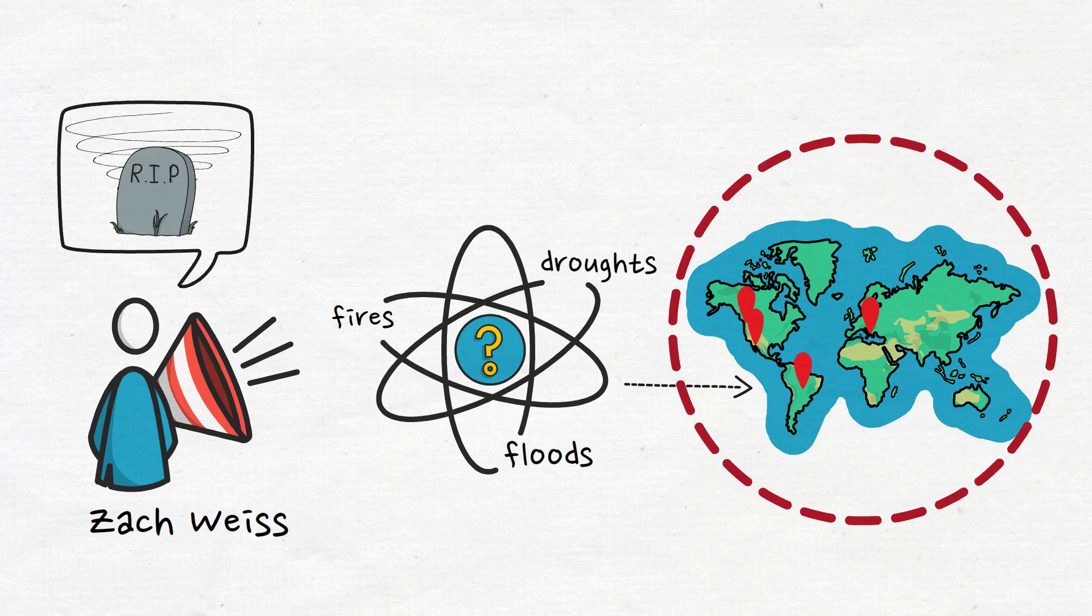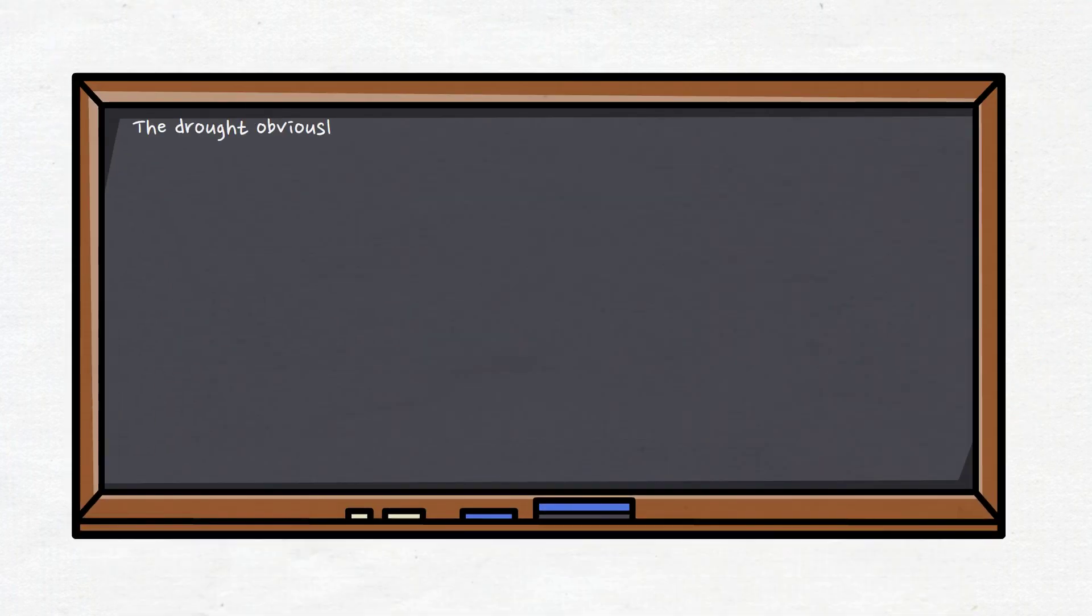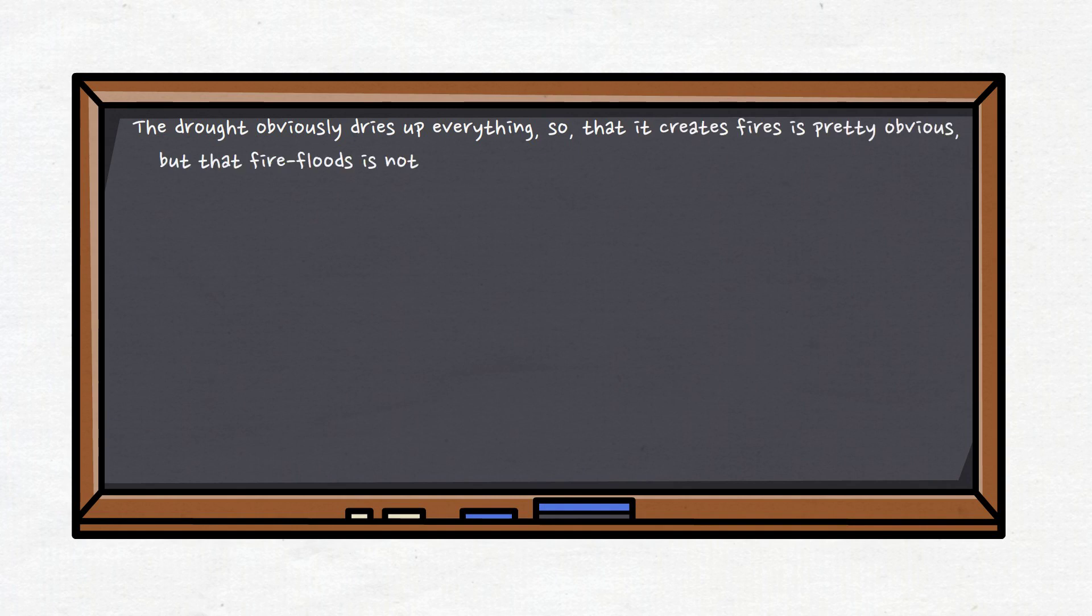Let me explain the connection between the three. The drought obviously dries up everything so that it creates fires—that's pretty obvious. But fire to floods is not quite so obvious. What happens if your fires get too intense?